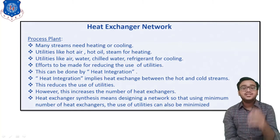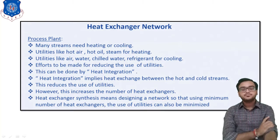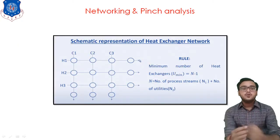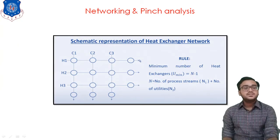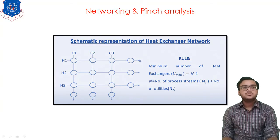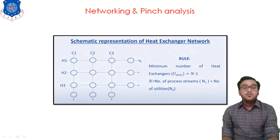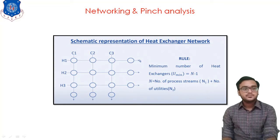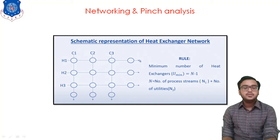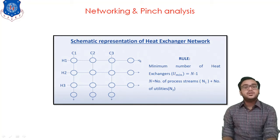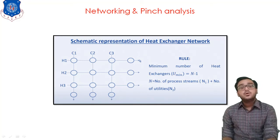Let's consider a diagram. Here we have hot streams H1, H2, H3 and cold streams C1, C2, and C3. For example, hot stream H1 has a temperature of 200 degrees and we want to reduce the temperature of this stream to 100 degrees. We have lots of options available — we can arrange the flow of cold streams over it.